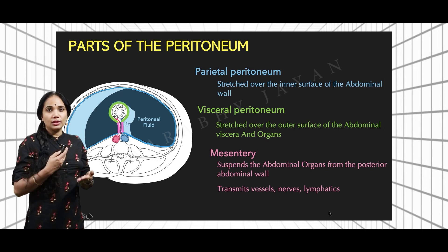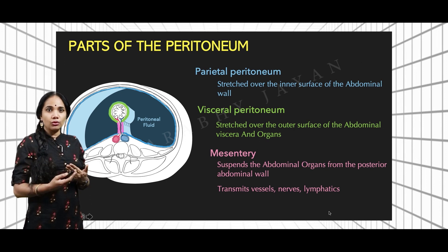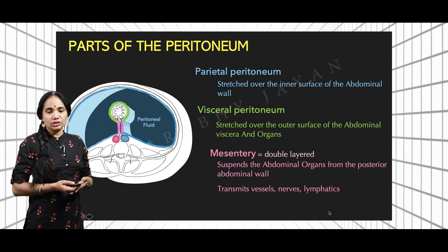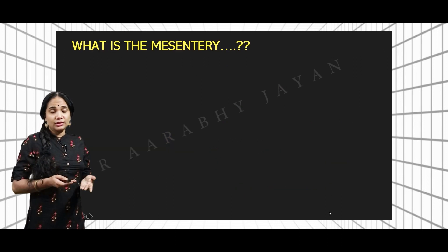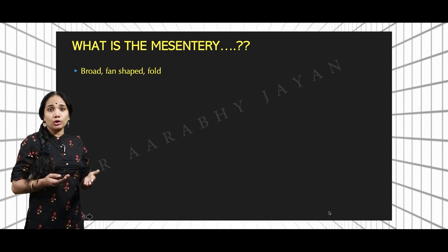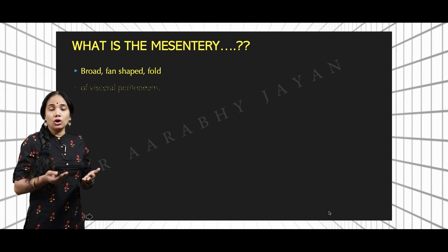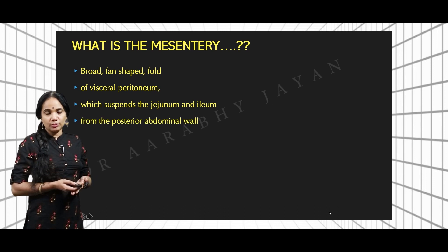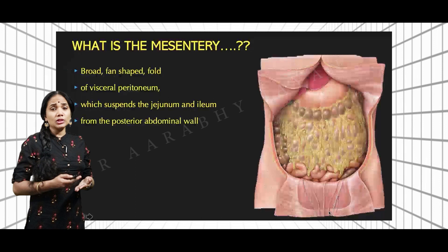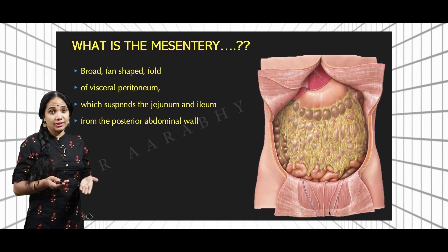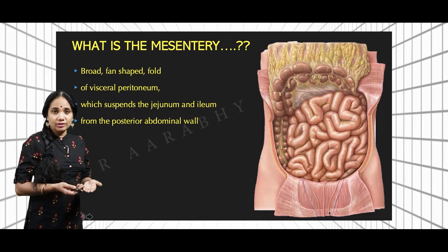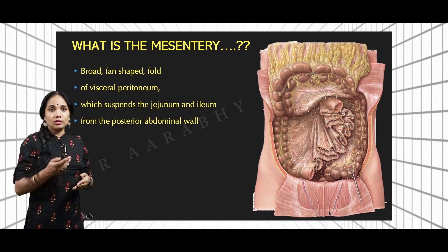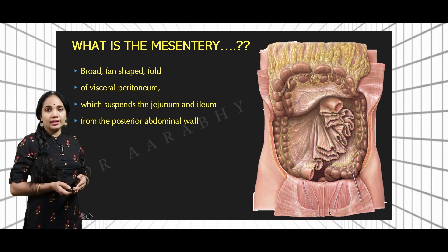The topic for today is the mesentery — that is the part of the peritoneum which suspends abdominal organs from the posterior abdominal wall. It also transmits vessels, lymphatics, and nerves to and fro from the posterior abdominal wall to the suspending viscera, and it is a double layered structure. The mesentery is defined as a broad fan-shaped fold of visceral peritoneum which suspends the jejunum and the ileum from the posterior abdominal wall. Once you open the abdominal cavity and lift the greater omentum, you can see the coils of the small intestine and the large intestine, and once you remove the small intestine, the folds you see there is the mesentery.